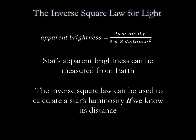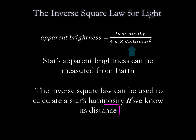A star's luminosity depends on apparent brightness and distance. In most cases, we can easily measure apparent brightness from Earth. The distance is often more difficult to determine, but we need it if we want to determine luminosity. We'll discuss distance measurements in just a bit.